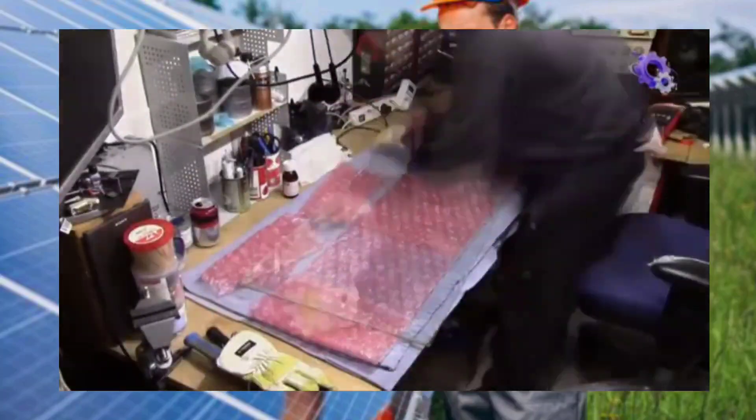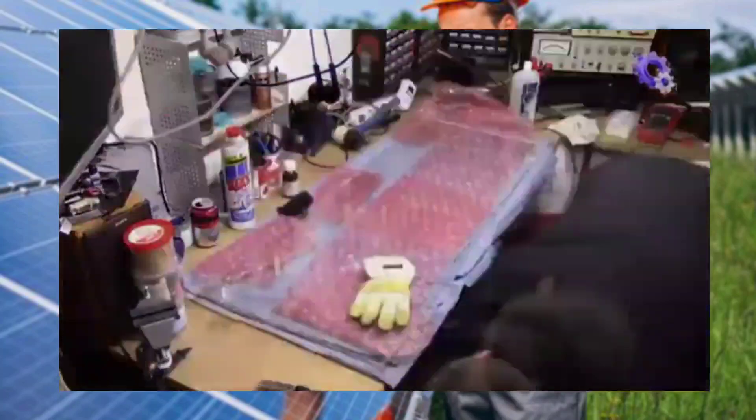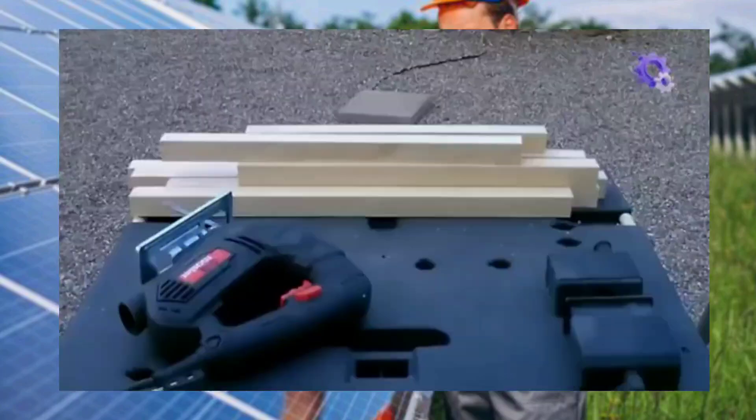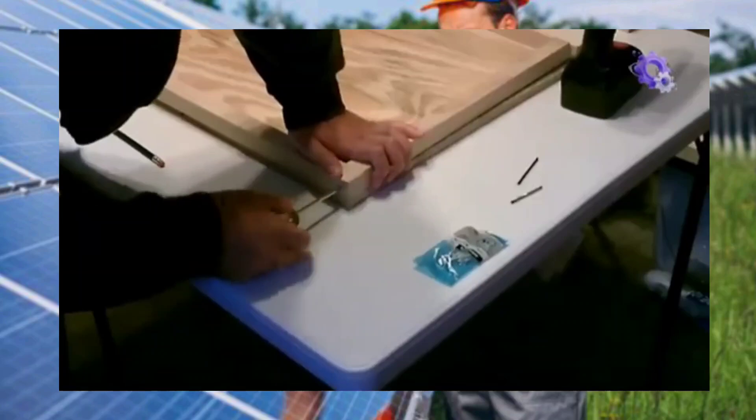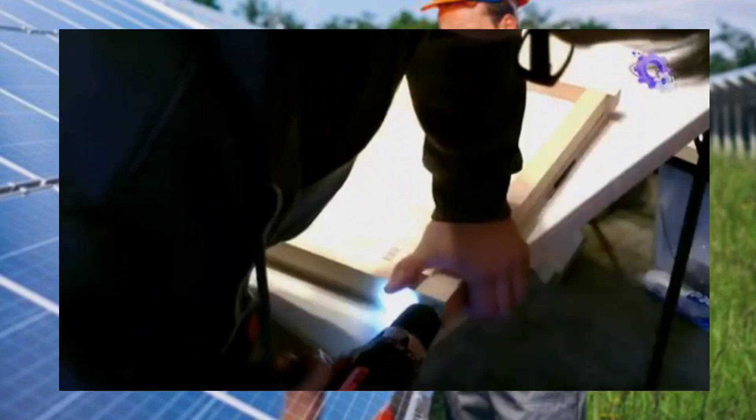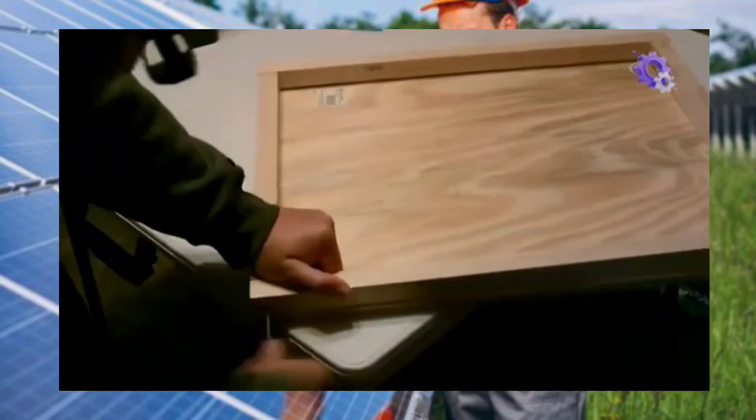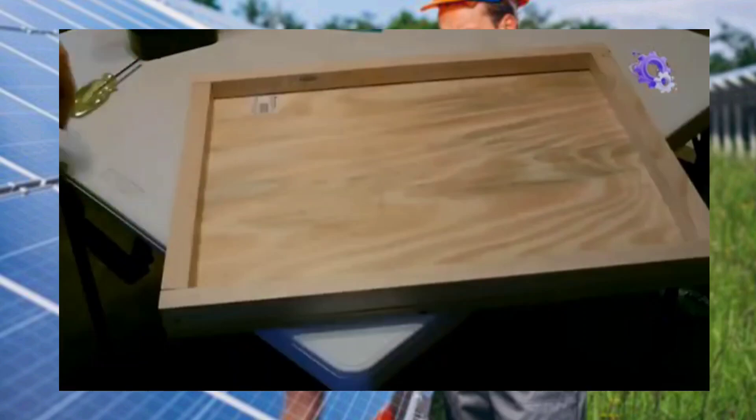The second step is material cutting and workspace setup. Precise cutting of materials and setting up a well-organized workspace with proper lighting and ventilation are essential for safety and efficiency. Adequate airflow facilitates soldering and encapsulation processes later on.